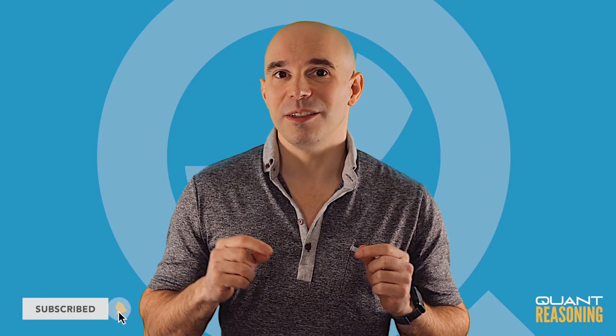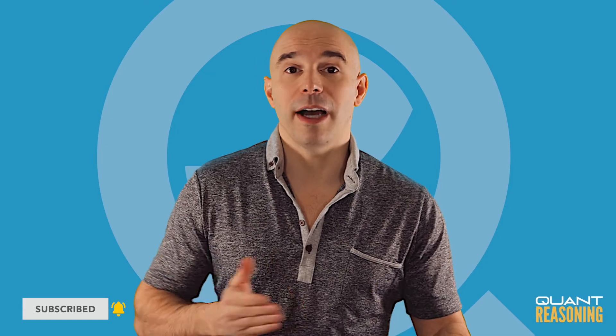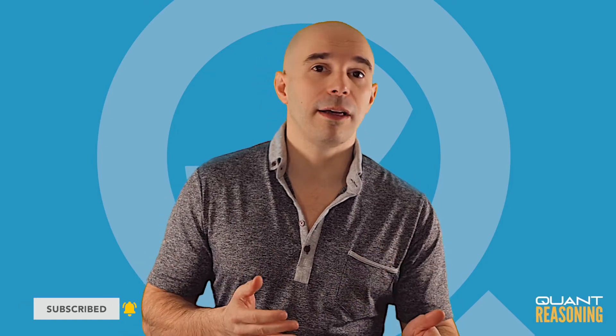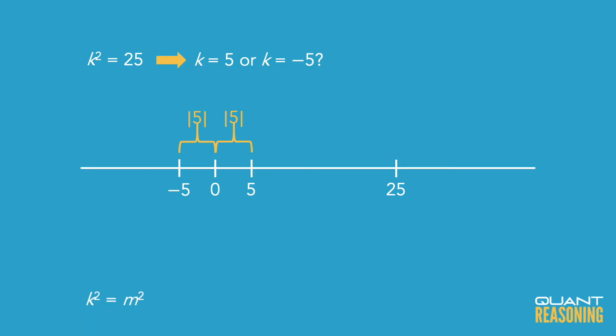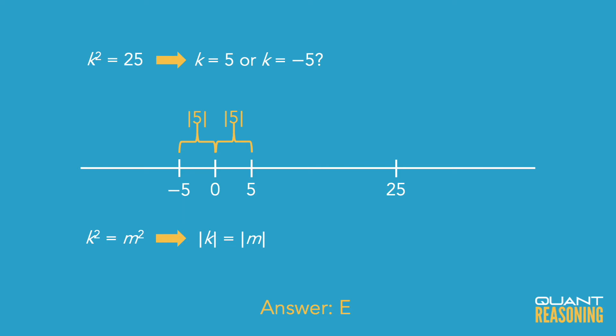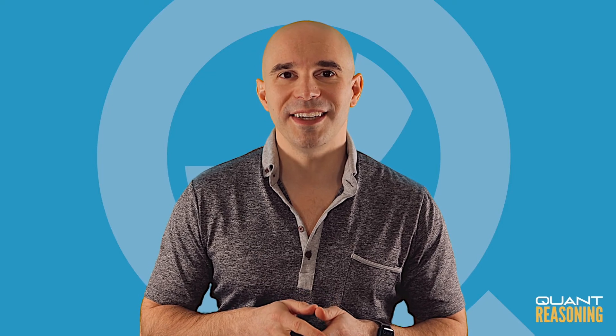They're telling us that k squared is at the same spot as m squared, but we don't know which side of zero k and m came from. Answer choice E deals with that beautifully — it says I don't know which side of zero k came from or which side m came from, but I do know they are both exactly the same distance away from zero, because once you square them they end up on the same spot on the number line. So the correct answer must be E.